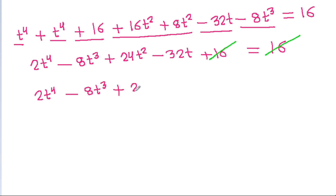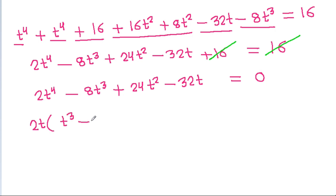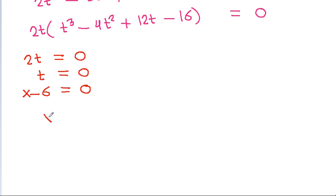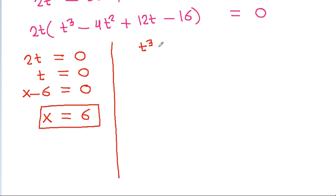This simplifies to 2t⁴ - 8t³ + 24t² - 32t = 0. We can factor out 2t, giving 2t(t³ - 4t² + 12t - 16) = 0. So either 2t = 0, meaning t = 0, and since t = x - 6, we get x = 6.